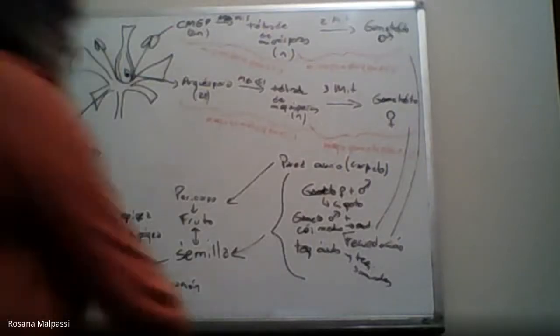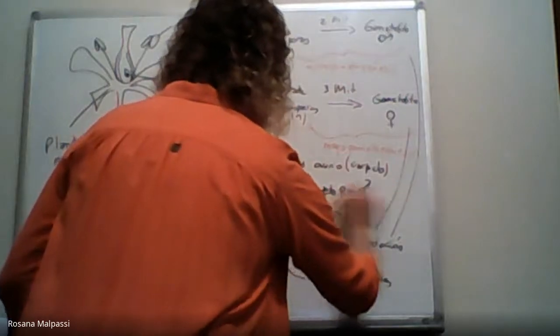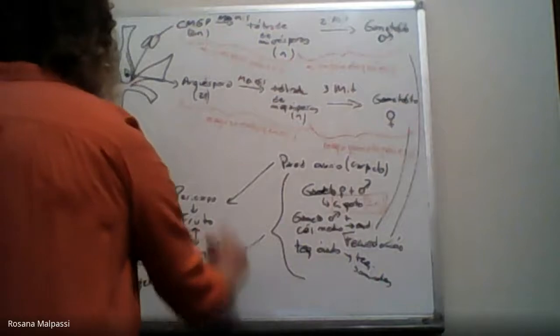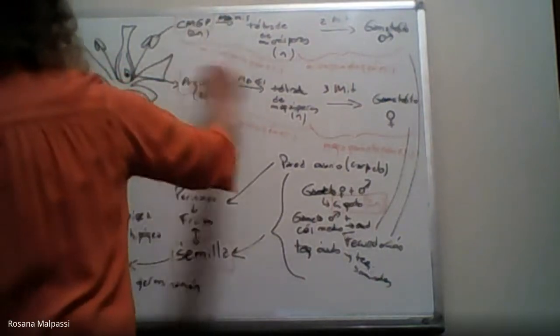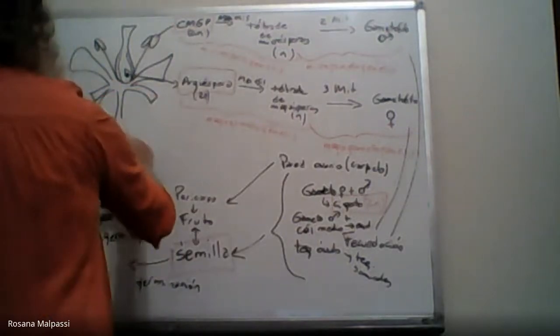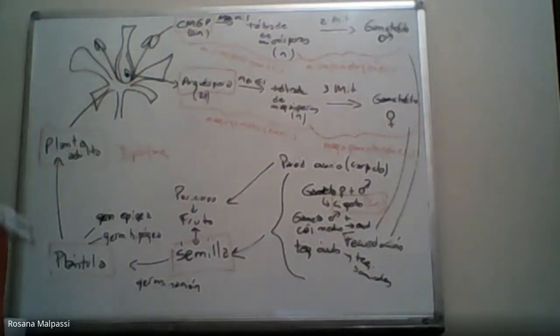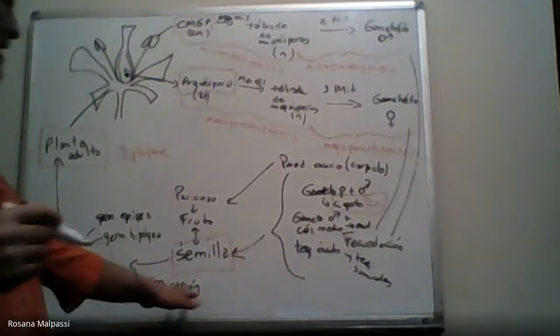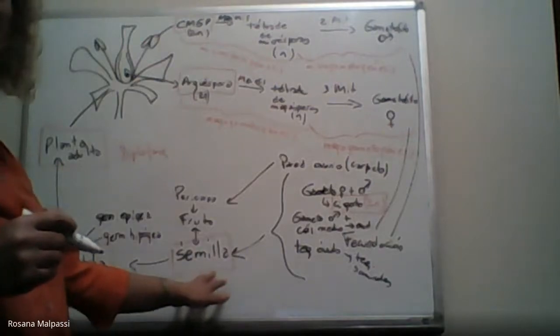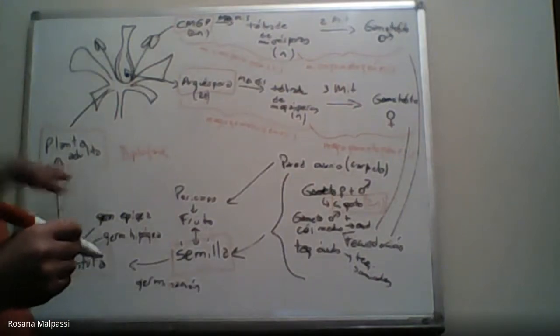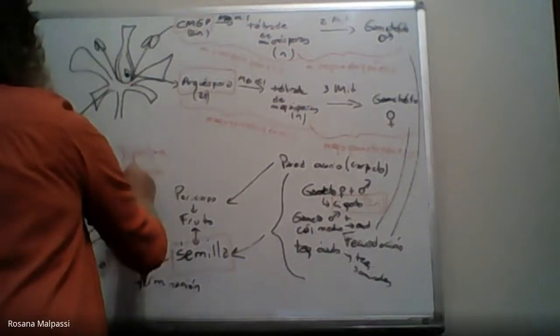Entonces fíjense, chicos, que desde el cigoto, que es la primera célula 2n, pasando por la semilla, plántula, planta adulta, hasta las células madre grano de polen y la arquéspora, estamos hablando de la diplofase, esa diplofase que siempre va a estar sostenida en el esporofito. El esporofito acá lo tenemos que pensar, ¿cómo? Cuando tenemos semilla, el esporofito es el embrión, luego se transforma en plántula cuando crece y la planta adulta, por eso se dice que esta diplofase coincide con la generación esporofítica.